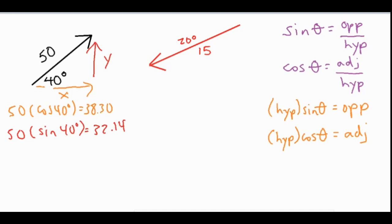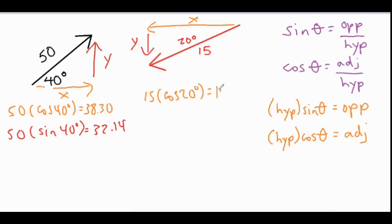For our second vector we're going to do something very similar except we close off the triangle going left and then down. We could use 70 degrees as the complement, but I'm just going to use the given angle of 20 degrees to simplify things. We have an x component and a y component. The hypotenuse is 15 times the cosine of 20 degrees, which gives us 14.10. For the y component, 15 times the sine of 20 degrees gives us 5.13.